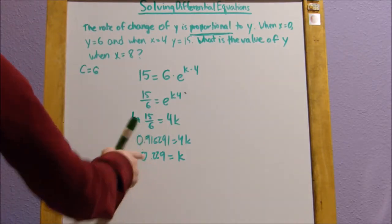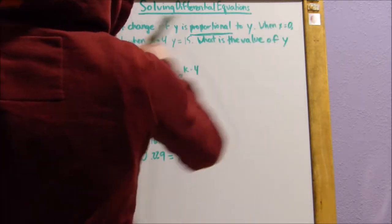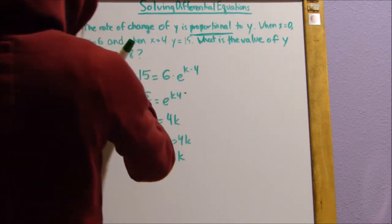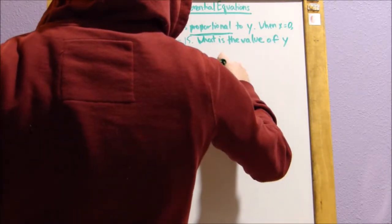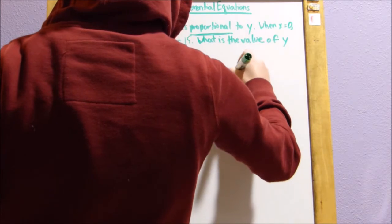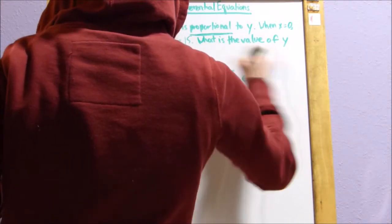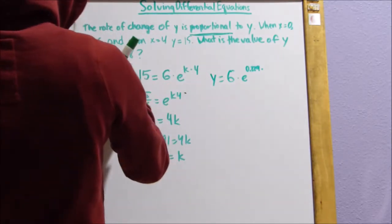And it makes sense that this is positive, not negative, because this is growth. You can see it goes from 6 to 15. Now that we have k, we just plug in everything that we know. So y equals 6 times e to the 0.229 times, t in this situation is 8.